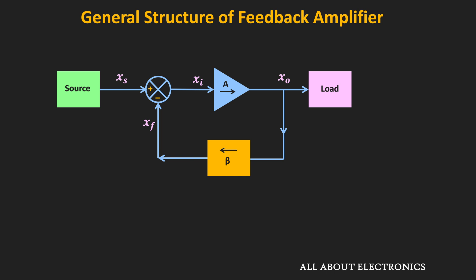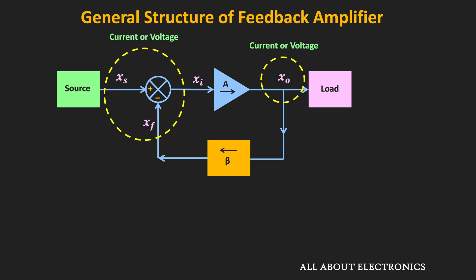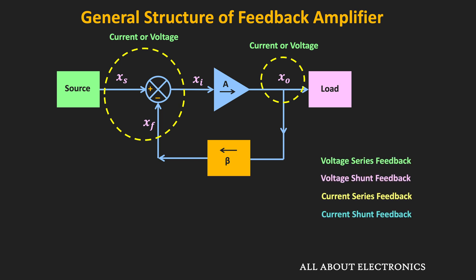The general structure of the feedback amplifier consists of two parts: the sensing part and the mixing part. The sensing part senses the output signal and a fraction of that output signal is sent to the input side. This output signal can be either voltage or current. Similarly, the feedback signal which is mixed with the source signal can also be voltage or current. Based on either current or voltage on both the sensing and mixing sides, we will have four different feedback topologies.